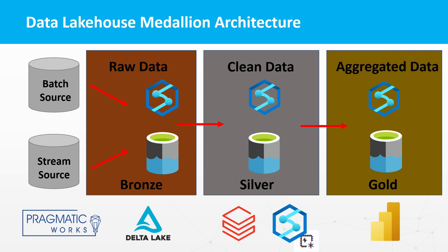The silver layer is the intermediate processing layer where data is transformed, cleaned, and standardized. This layer is optimized for query performance and data consistency and is often used for data analysis and reporting. The gold layer is the refined processed data layer where data is modeled, aggregated, and optimized for specific use cases. This layer is optimized for performance and data quality and is typically used for business intelligence and advanced analytics. By organizing data in this way, the bronze-silver-gold layering approach enables organizations to effectively manage and utilize their data, helping ensure that data is accurate, consistent, and accessible.